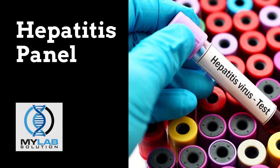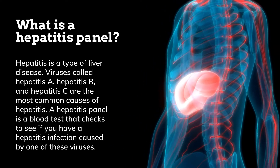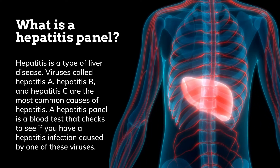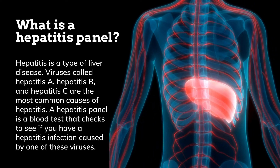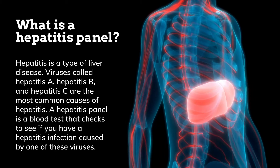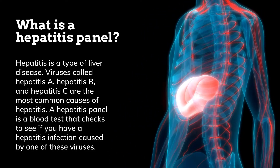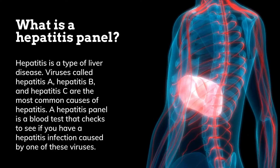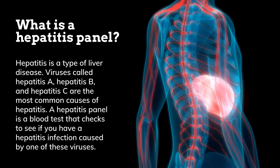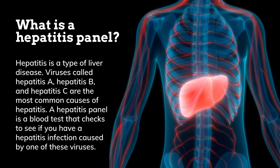Hepatitis Panel. What is a Hepatitis Panel? Hepatitis is a type of liver disease. Viruses called Hepatitis A, Hepatitis B, and Hepatitis C are the most common causes of hepatitis. A Hepatitis Panel is a blood test that checks to see if you have a hepatitis infection caused by one of these viruses.